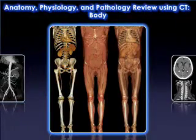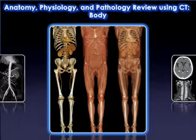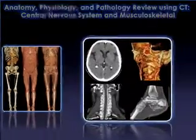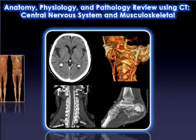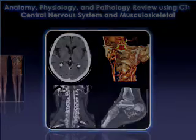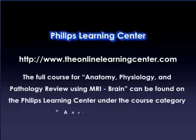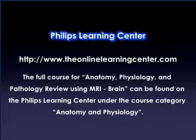For those interested in computed tomography, the following courses can be found under the Anatomy and Physiology section of the course catalog: Anatomy, Physiology, and Pathology Review using CT, Body; Anatomy, Physiology, and Pathology Review using CT, Central Nervous System and Musculoskeletal. The full course for Anatomy, Physiology, and Pathology Review using MRI, Brain can be found on the Philips Learning Center under the course category Anatomy and Physiology.